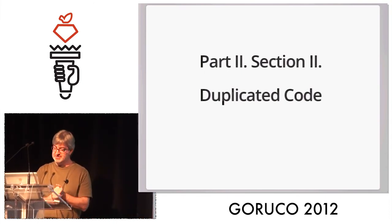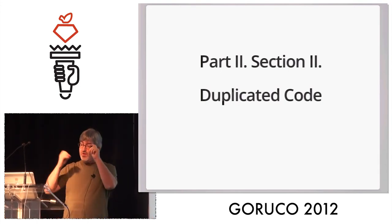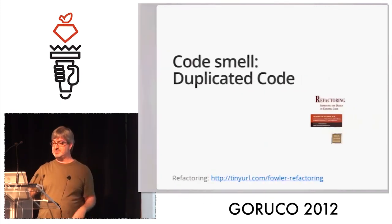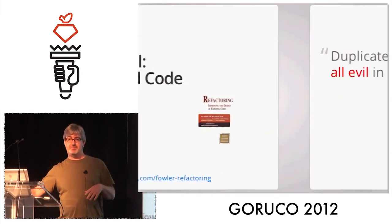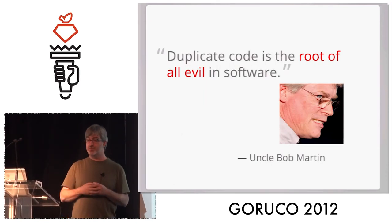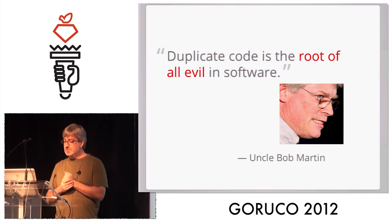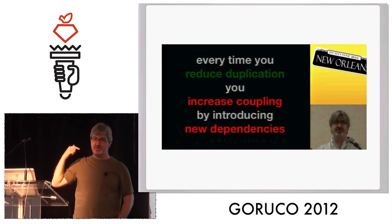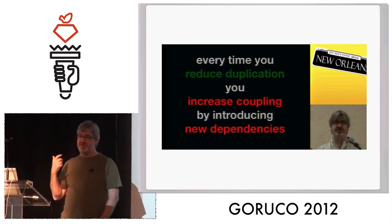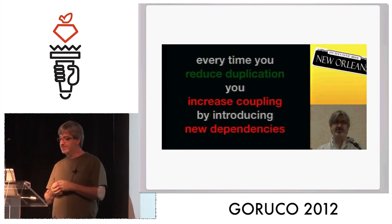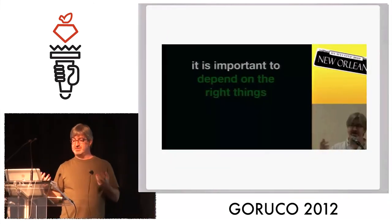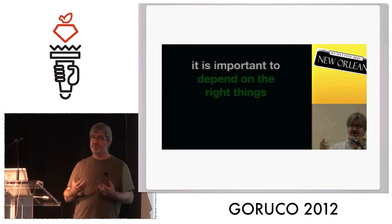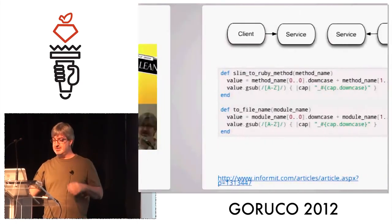Let's talk about duplicated code, which is the code smell that there are similar code constructs in different parts of the same code base. It's very different from DRY, or maybe a subset of it. We have well-known people like Uncle Bob Martin saying things like 'duplicated code is the root of all evil in software.' Reducing duplication is really important, but every time you reduce duplication, you also increase coupling by introducing dependencies. It's important to depend on the right things - coupling is necessary, but you want to be careful about how you couple things together.